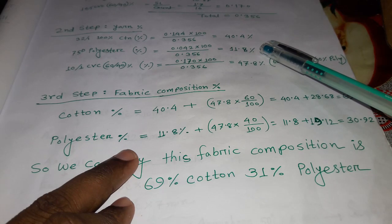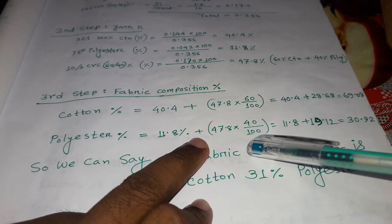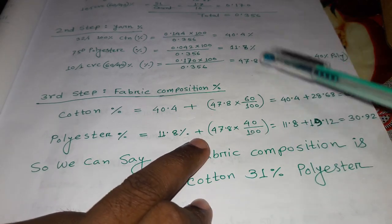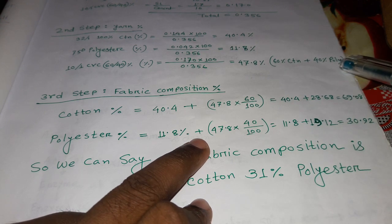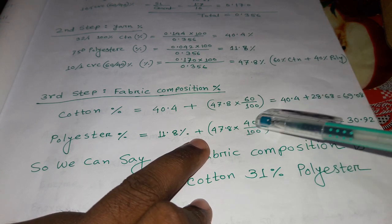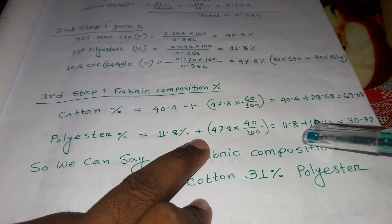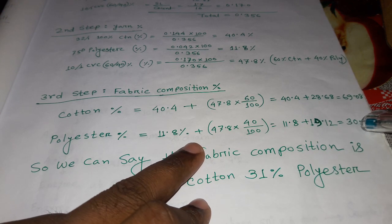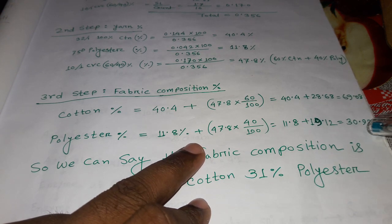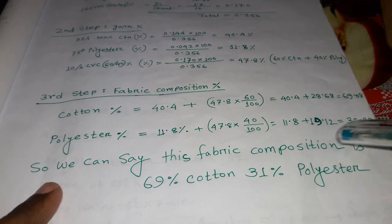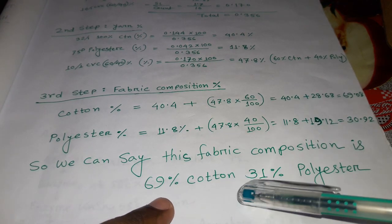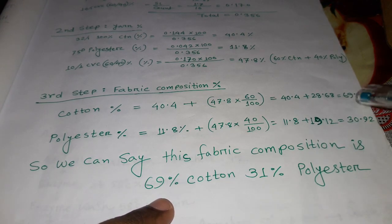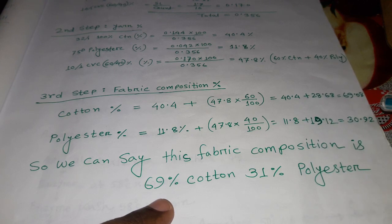Polyester percentage equals: 11.8% (from 75 denier polyester) plus the polyester portion from the CVC yarn: 47.8% × 40/100 = 19.12%. So total polyester = 11.8 + 19.12 = 30.92%. Therefore, the final fabric composition is 69% cotton and 31% polyester.